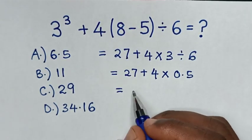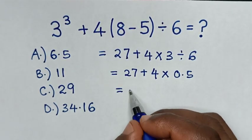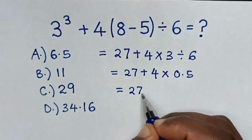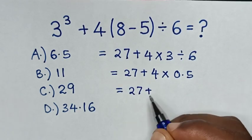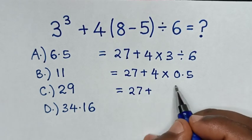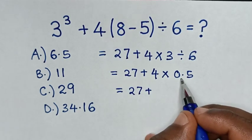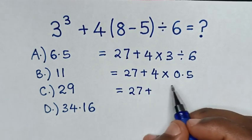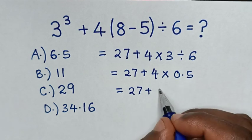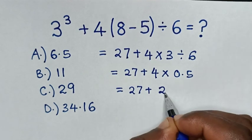Then it will be equal to 27 plus 4 times 0.5. And 4 times a half is 2.